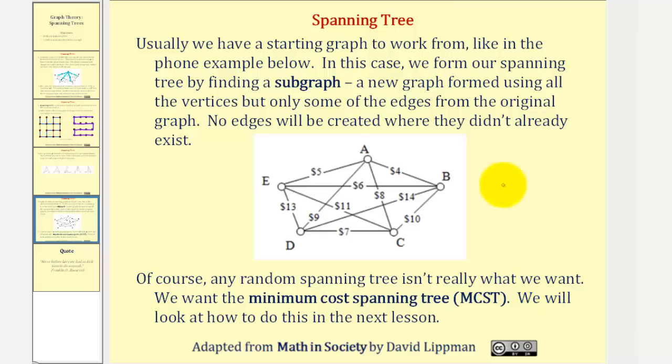But before we go, if we were trying to find the minimum cost spanning tree for this graph here, it does make sense we want to use the edges with the least weight. So for example, looking at this graph, if we could, we want to use edge AB,